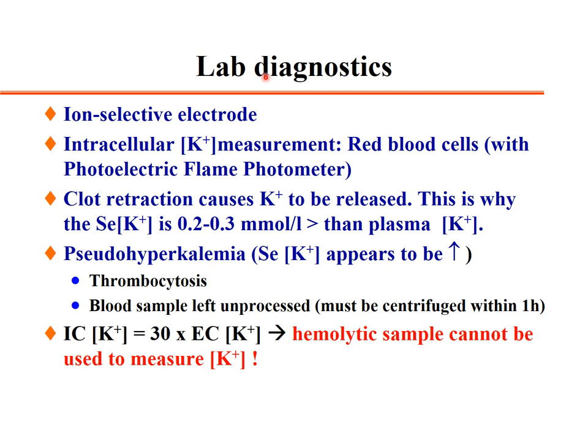Ions in plasma are detected using ion-selective electrodes. Intracellular potassium is usually measured photometrically or by flame photometer in red blood cells. An important caveat: potassium measurement is difficult if blood sits too long, as clot retraction or clotting can release potassium from cells into the serum.